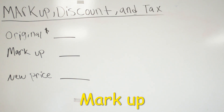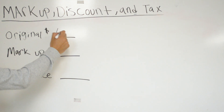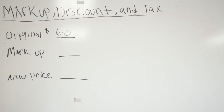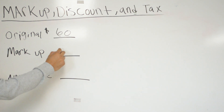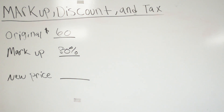Let's do a markup problem. The original price of a shirt is $60. Everybody wants the same shirt, so the people that make the shirts are going to mark it up — they're going to mark it up by 80%. We need to find what the new price of the shirt is going to be.